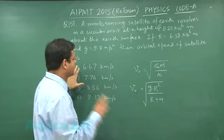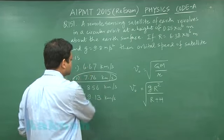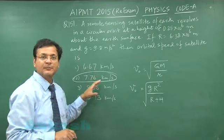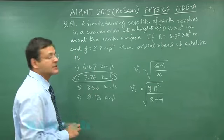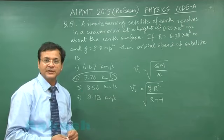So if you calculate all those things you will find that the answer which is coming out, that is orbital speed, is 7.76 kilometer per second. So this will be the answer to this question 151. Switch over to next question, that is 152.